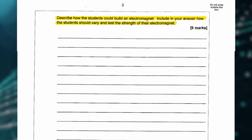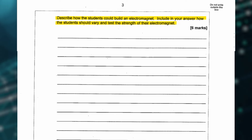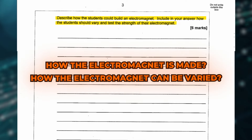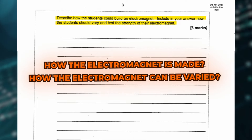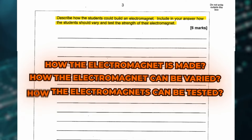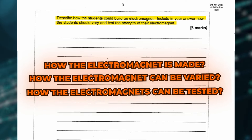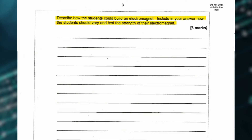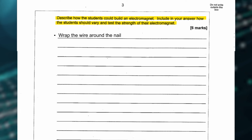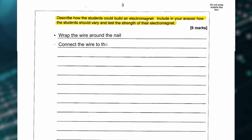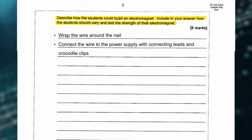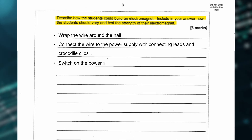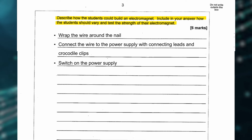To get 5 to 6 marks for this question, you need a description of how the electromagnet is made, how it can be varied, and how it can be tested. In terms of how it can be made: wrap the wire around the nail, connect the wire to the power supply with connecting leads and crocodile clips, and switch on the power supply.